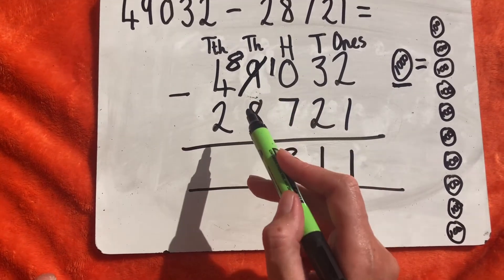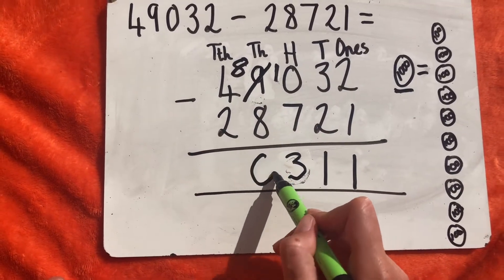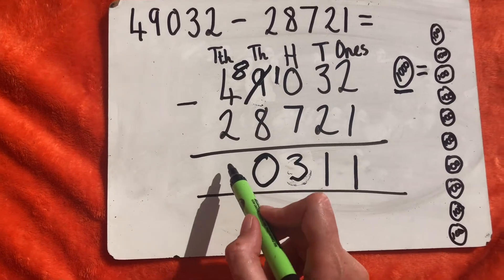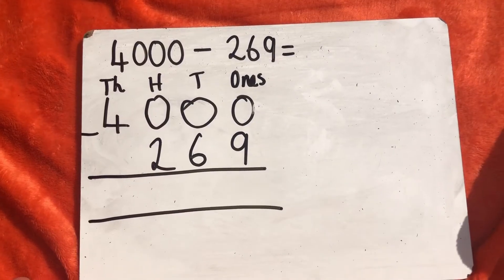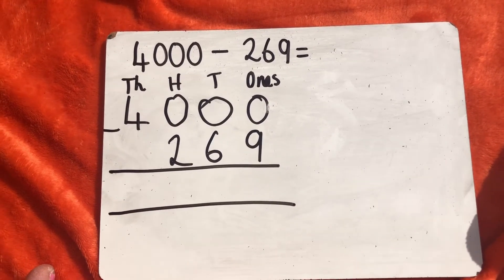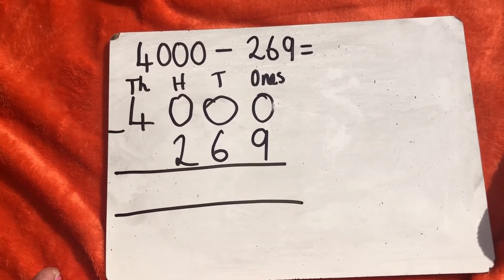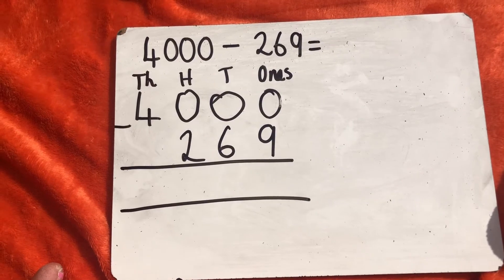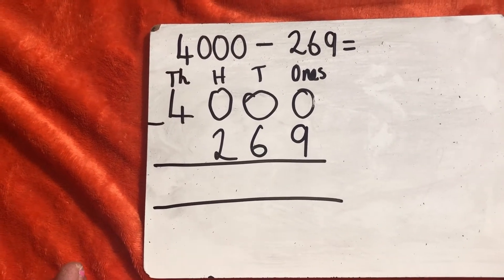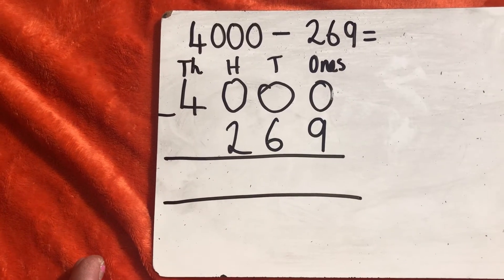I then got 8,000 subtract 8,000 which gives me 0, and my 40,000 take away 20,000. Now let's have a look at this next question. We're going to work this out in two different ways and I'm going to explain why. On the surface I can see already that this is going to be quite a challenge.